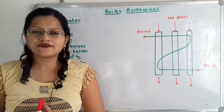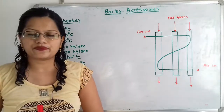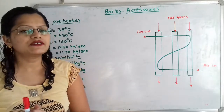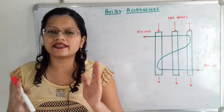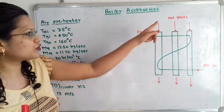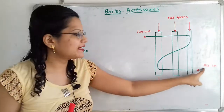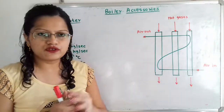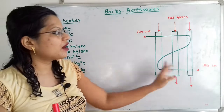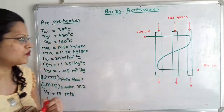Let us first understand the given data with the help of a diagram. In the question it is mentioned that the gases flow inside the tubes and air flows above the tubes. So we show hot gases passing through these vertical tubes and air flowing above the tubes. Both are moving in opposite directions, so this flow is counter flow.